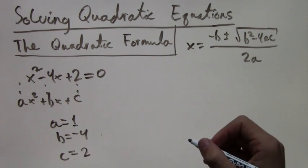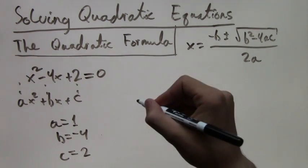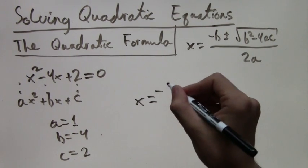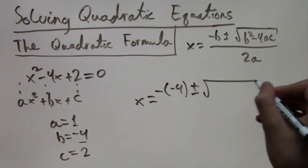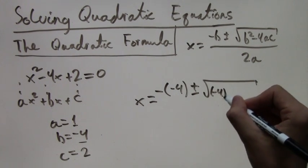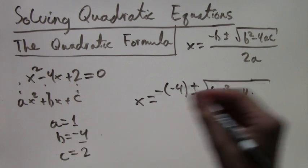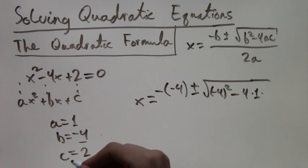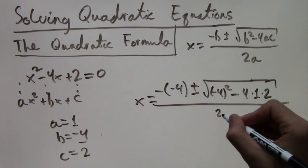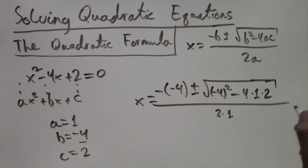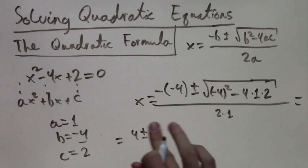So now we plug these in. So x would equal negative negative 4, plus or minus the square root of negative 4 squared, minus 4 times 1, and then also times 2. And all of this over 2 times 1. And then we simplify. Well, first of all, negative negative 4 is 4.